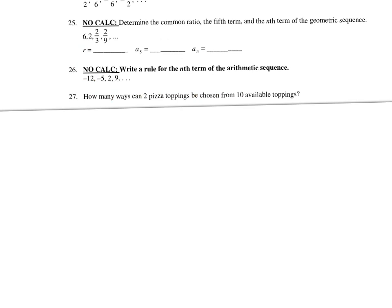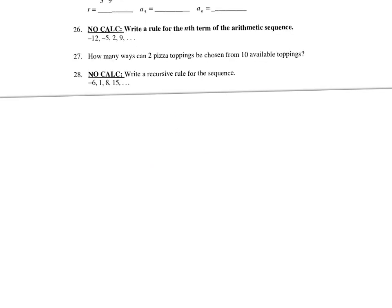Number 27: how many ways can two pizza toppings be chosen from 10 available toppings? That's a combination because the order the toppings go on doesn't matter. So it's 10C2.